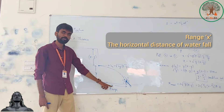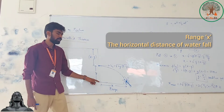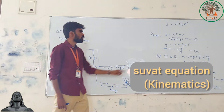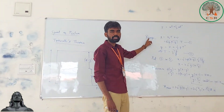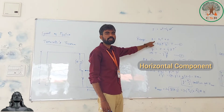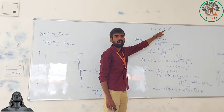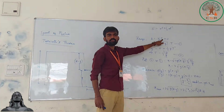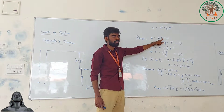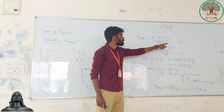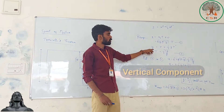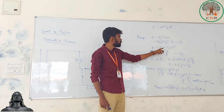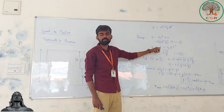Now, the range x is the horizontal distance where the water touches the ground from the tank. Along the horizontal direction, x equals u·t plus half·a·t squared, and since horizontal acceleration is zero, x equals v·t. Along the vertical direction, y equals half·g·t squared because the initial vertical velocity component is zero — water exits horizontally.